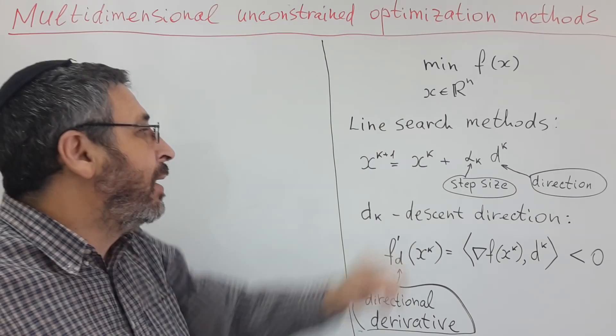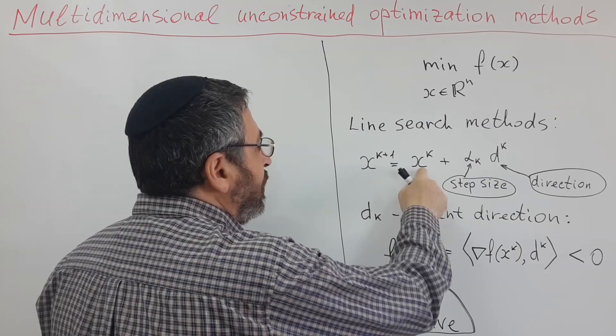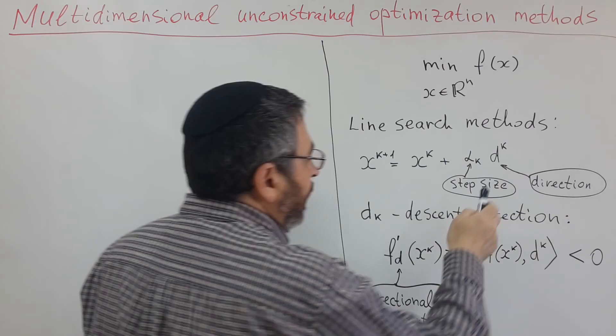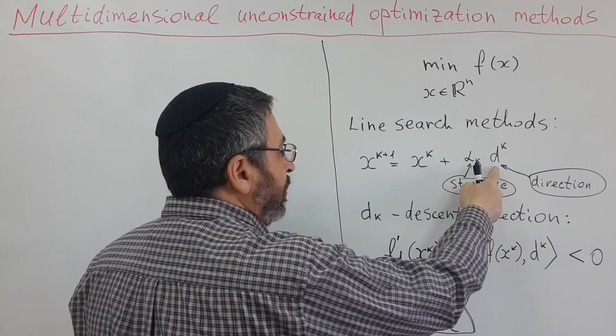The central class of methods we will learn is the so-called line-search methods. We progress from iterate to iterate, from point to point, moving in direction of descent, of function descent, with certain step size. So, dk is direction and alpha k is step size.